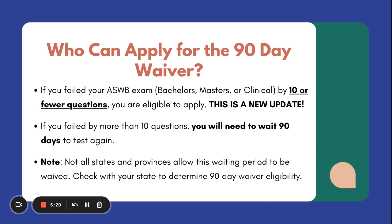If it was more than 10 questions, you will need to wait the 90 days. But it's important to note, not all states and provinces allow this waiting period — it is state by state dependent. So check with your state; it is likely somewhere on their website to determine if you are even eligible to sit closer and if you're able to apply for that waiver.